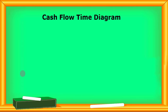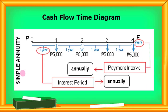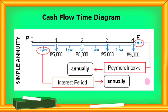That's basically the difference between simple and general annuity. Now we have the cash flow time diagram for a simple annuity. We have the payment interval with the amount reflected for each year — the present value, the future value, and the timeline indicating the years. On the first year, P5,000; second year, P5,000; and so on. The payment interval is annually or yearly — from 0 to 1, one year. This is the interest rate period, and it's annually also. So if the payment interval and the interest rate period are the same, we have a simple annuity.